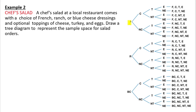So I had French, ranch, or blue cheese, and then cheese or no cheese for each, then turkey or not turkey, and so on, and then eggs or no eggs. You could have French, cheese, turkey, and no egg, or blue cheese, no cheese, turkey, no egg — this is how restaurants figure out how many different combinations they have, and it comes out to 24 options.